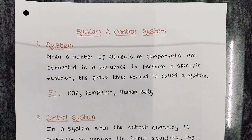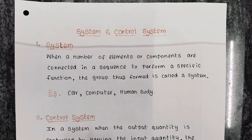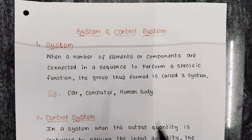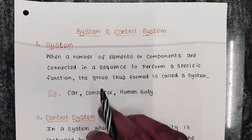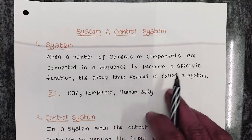And there is a purpose for that. Similarly, there are many parts in a computer, all connected in a sequence for a specific purpose or specific function. Similarly, in our body, there are many organs, all connected in a sequence for a specific function. That group we call a system.